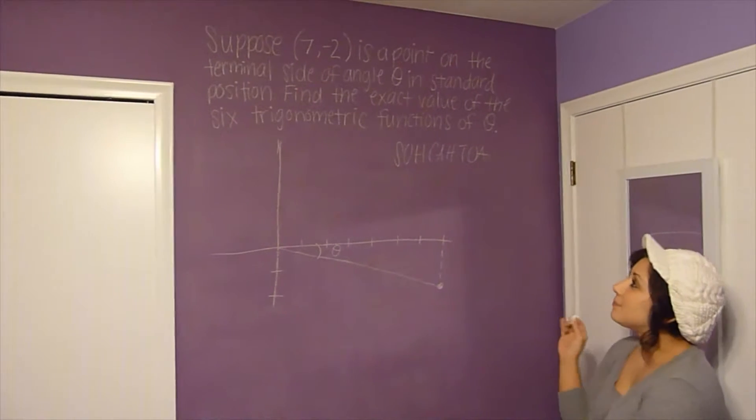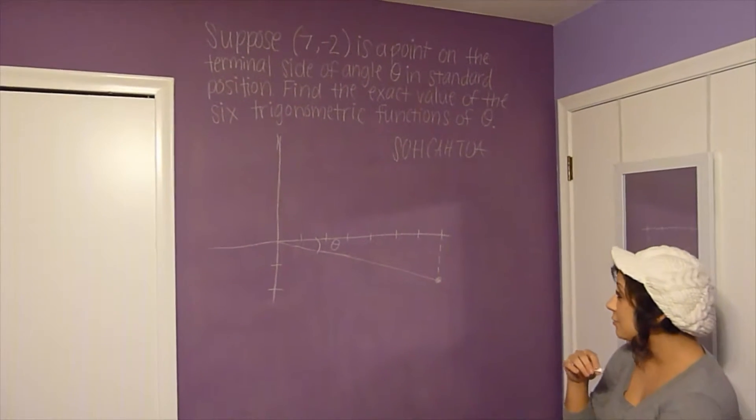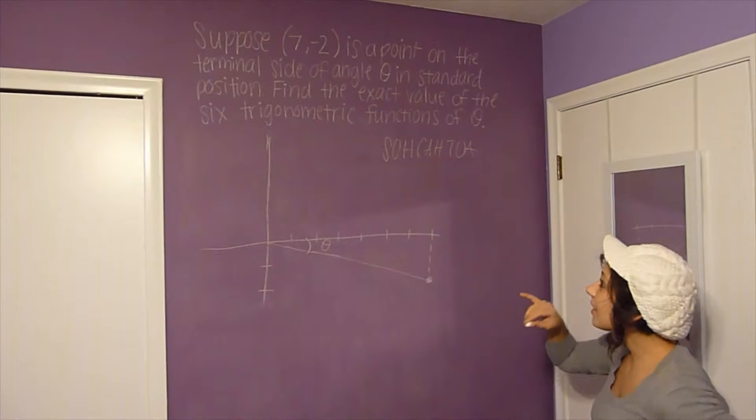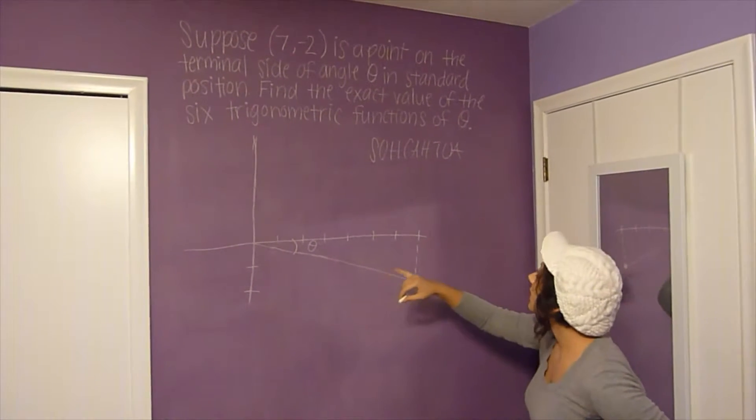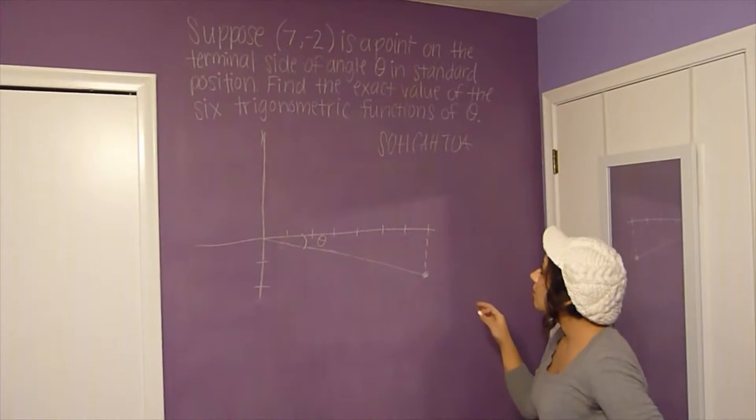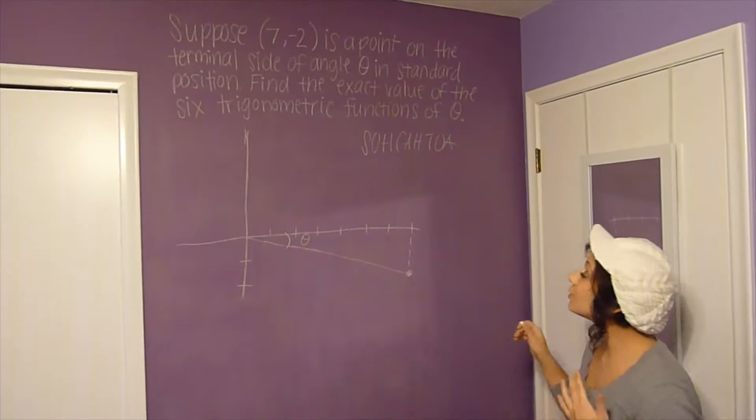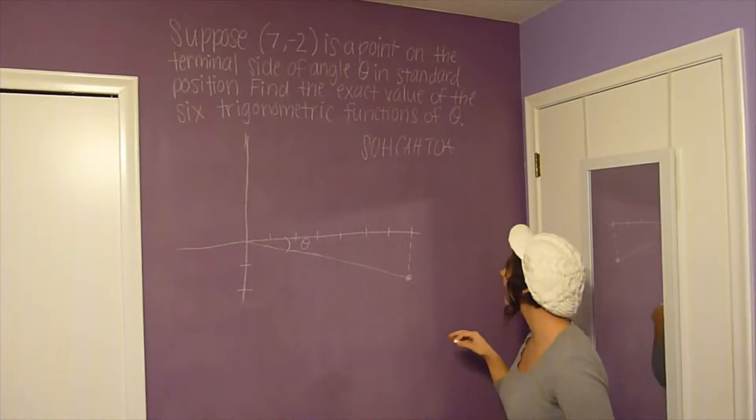Alright, so suppose (7, -2) is a point on the terminal side of angle theta in standard position. We have to find the six trigonometric functions of theta.